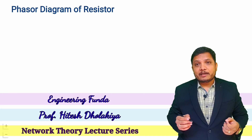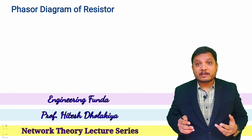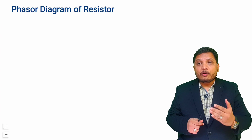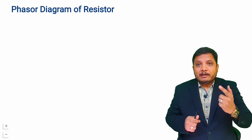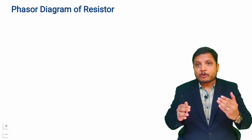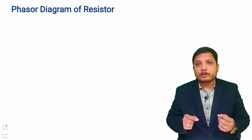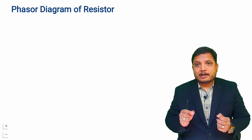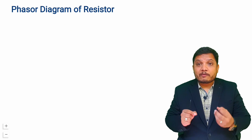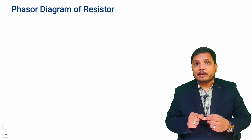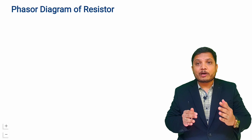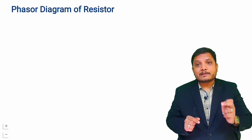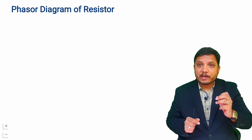Welcome to Engineering Funda family. This video is part of a network theory lecture series. In this video I will explain the phasor diagram for the basic electrical element: the resistor. For understanding the phasor diagram, I will provide one AC voltage source with a resistor and analyze the current passing through it, focusing on the phase difference between voltage and current. That analysis will be done in both time domain and frequency domain.